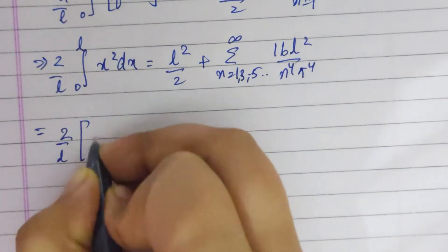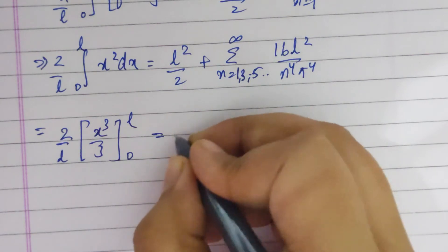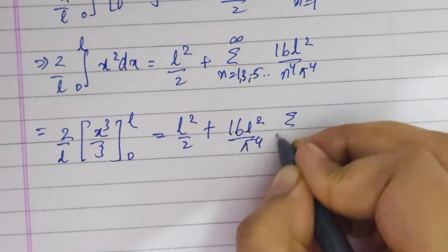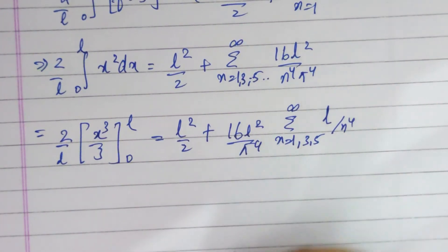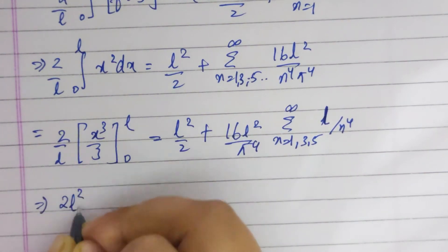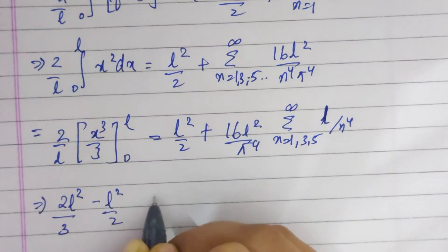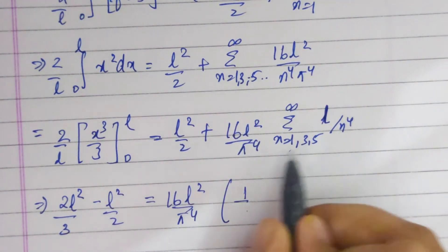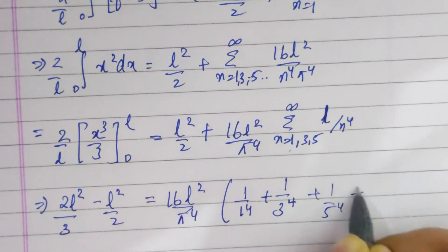Then 2 by l times the integral of x squared, which equals x cubed by 3, from 0 to l equals l squared by 2 plus, taking out constant terms, 16 l squared by pi to the power 4 times summation over n equals 1, 3, 5 up to infinity of 1 by n to the power 4. That gives 2l squared by 3. Taking l squared by 2 to the left side, we have 16 l squared by pi to the power 4 times the sum of 1 by 1 to the power 4 plus 1 by 3 to the power 4 plus 1 by 5 to the power 4 and so on. That equals l squared by 6.